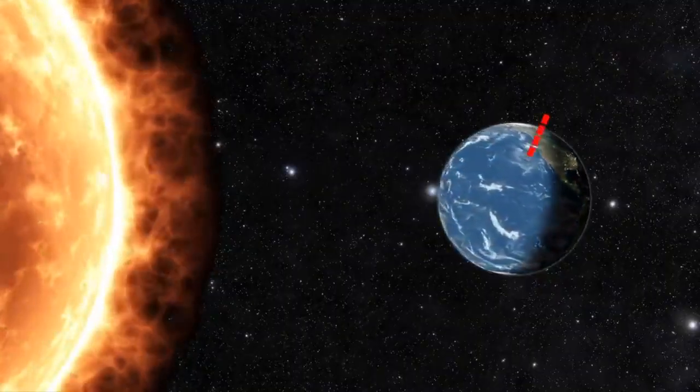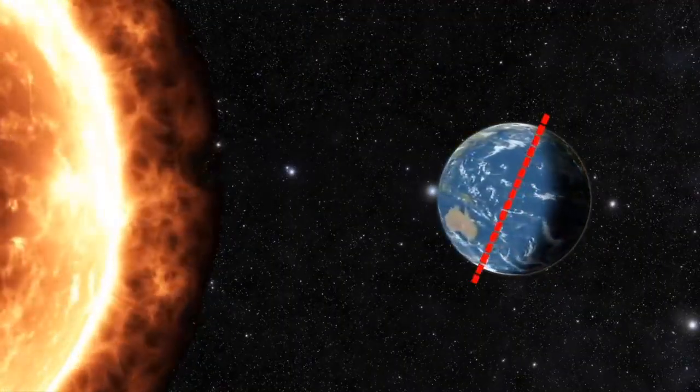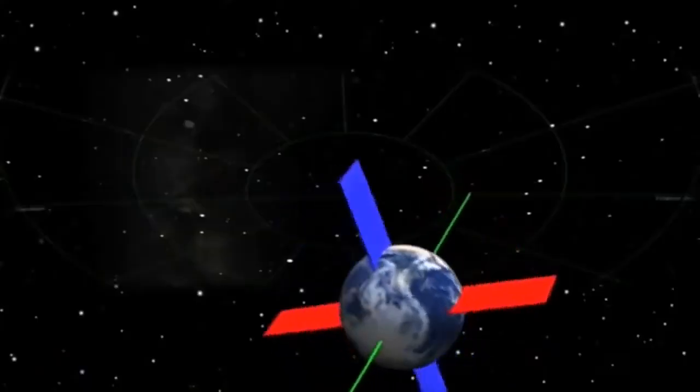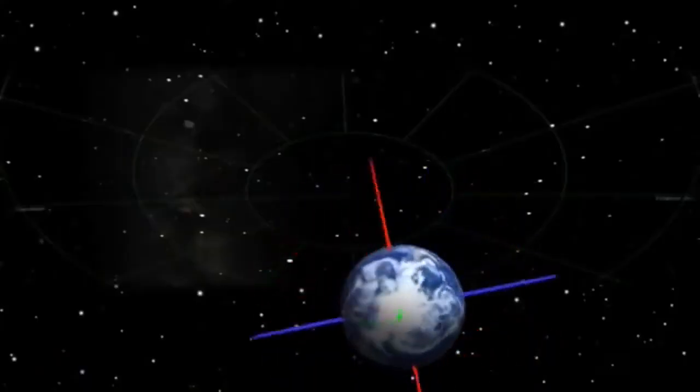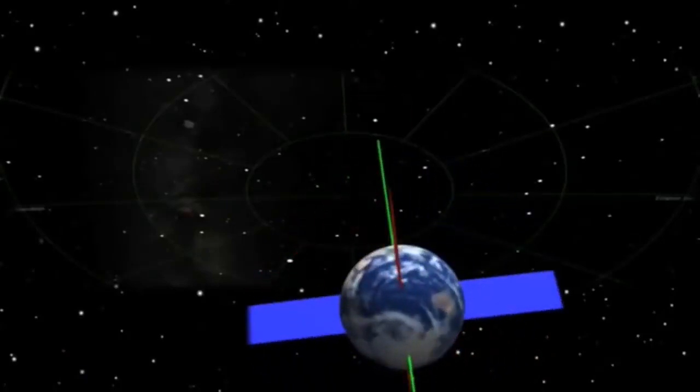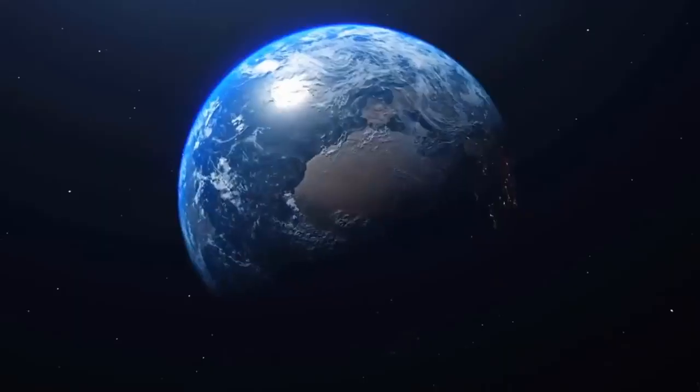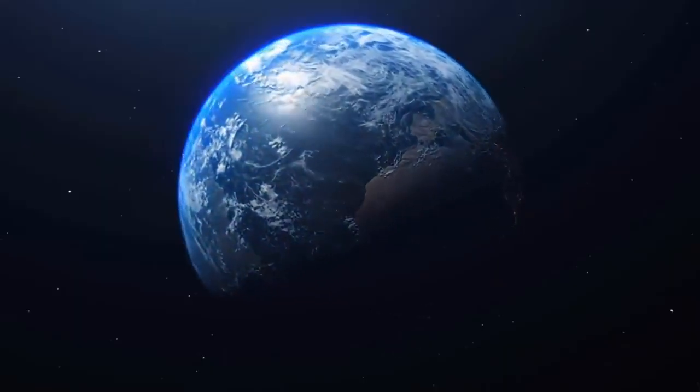Imagine a line passing through the center of Earth that goes through both the North Pole and the South Pole. This imaginary line is called an axis. Earth spins around its axis, just as a top spins around its spindle. This spinning movement is called Earth's rotation.